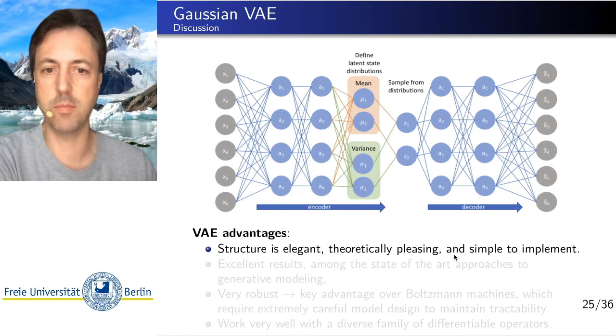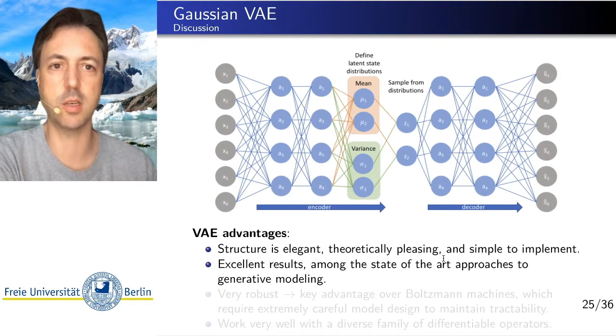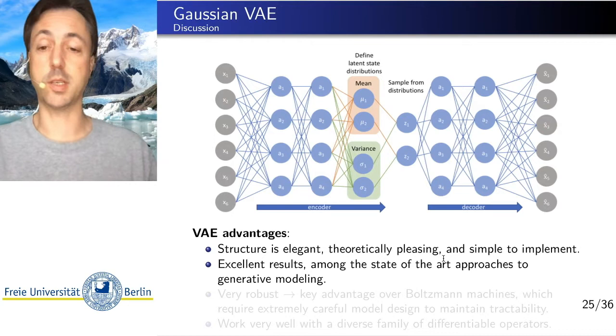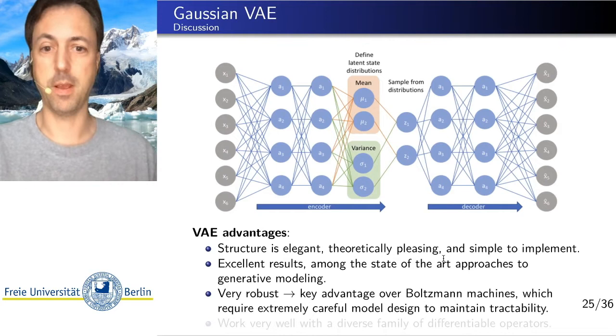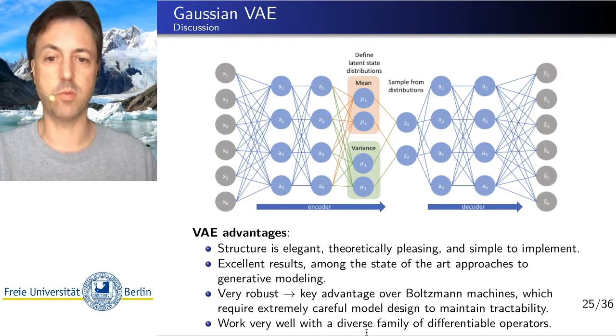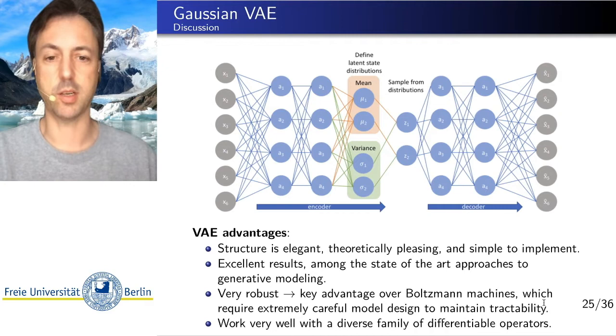They can give excellent results. So very high quality generative neural network properties, much better than restricted Boltzmann machines, for example. And variational autoencoders are amongst the state-of-the-art generative modeling approaches. It's very robust, so it's very easy to train. It's a big advantage over restricted Boltzmann machines that can be very difficult to train. And they work very well with a diverse family of neural network architectures and differentiable operators.